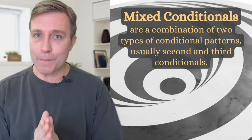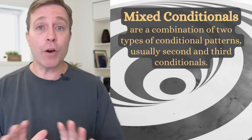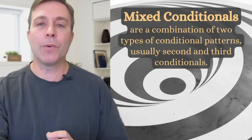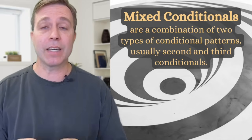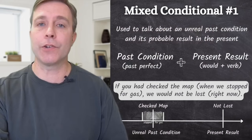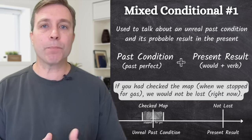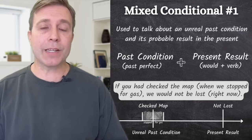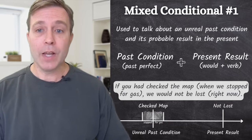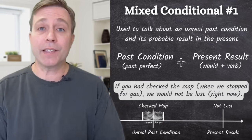Now let's get into the main event — mixed conditionals. These are a combination of two types of conditional patterns, and usually this is a combination of the second and third conditionals. There are two main types of mixed conditionals, and within each type there is another version that's closely related. Mixed conditional number one is used to talk about an unreal past condition and its probable result in the present. The past condition uses the past perfect — like in the third conditional — plus the present result uses would plus the verb, like in the second conditional.